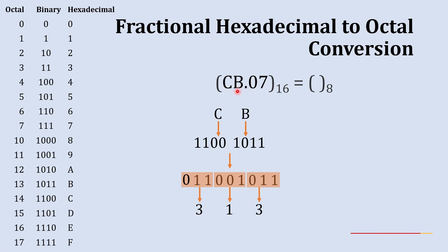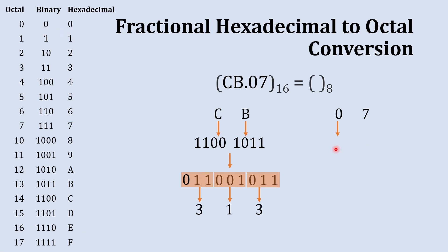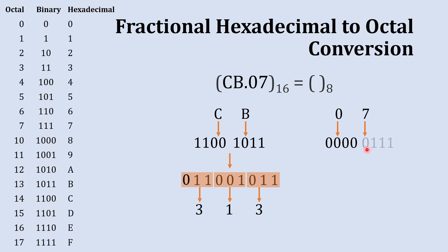Now for the fractional part, .07. We start from the left. The binary equivalent of hexadecimal 0 is 0000. The binary equivalent of 7 is 0111 using the four-digit representation. Combining these gives us 0000 0111, which is our complete binary number for the fractional part.